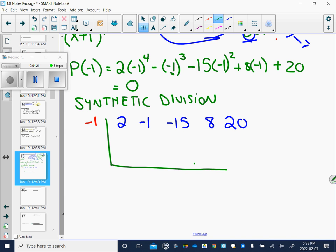We carry down this 2. 2 times negative 1 is negative 2. Here is a common mistake. We do not subtract like we do in division, regular division. In synthetic division, we add these together.